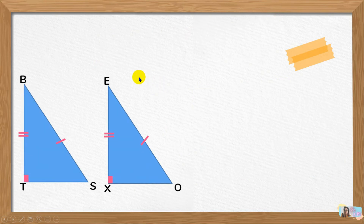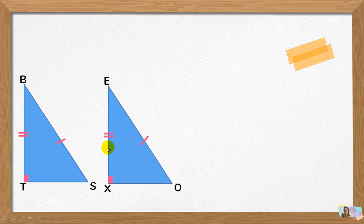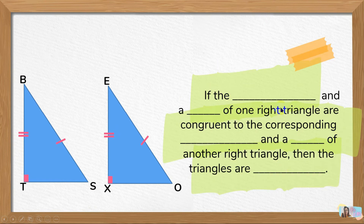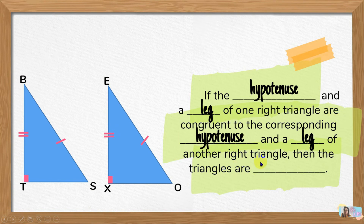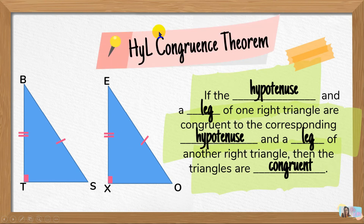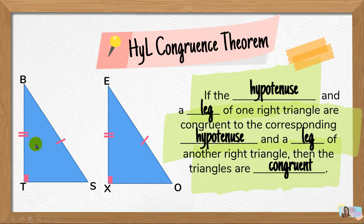Now let's proceed to another right triangle congruence theorem. We have side BT and side EX which are congruent — those are the legs — and side BS congruent to side EO, which are the hypotenuse. So the theorem states: if the hypotenuse and a leg of one right triangle are congruent to the hypotenuse and a leg of another right triangle, then the triangles are congruent. This is called the HYL congruence theorem — HY stands for hypotenuse and L stands for leg. In other books, this is known simply as HL.